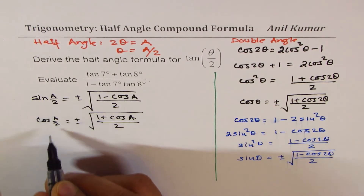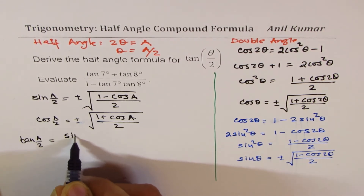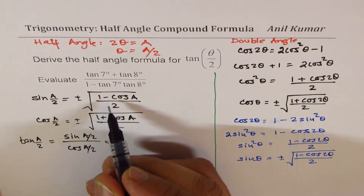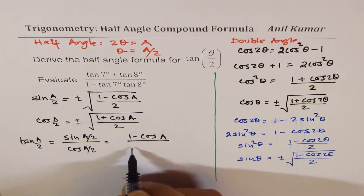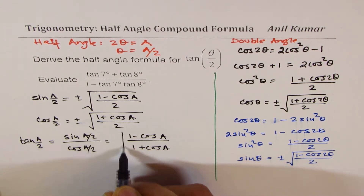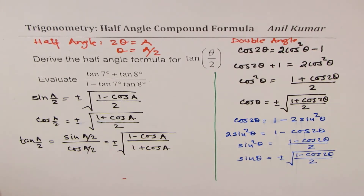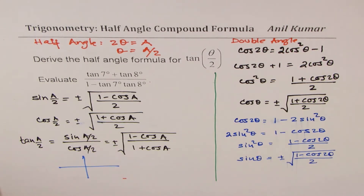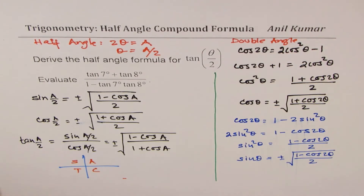For tan, we divide sin(a/2) by cos(a/2). So tan(a/2) clearly equals sin(a/2) over cos(a/2), which is the square root of (1 minus cos a) over (1 plus cos a), plus or minus — and those 2s cancel. We decide the sign based on the angle: all are positive in quadrant 1, sine in quadrant 2, tan in quadrant 3, cosine in quadrant 4. So that is the formula — we have derived our half-angle formula.